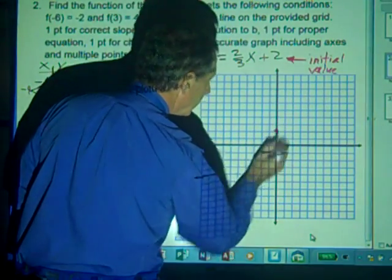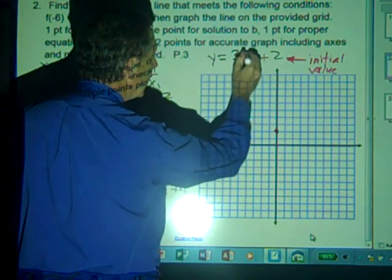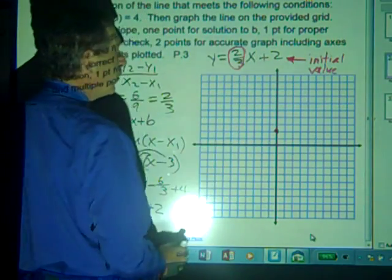So we come on our y-axis up to 2, mark our y-intercept, and here we have, in fractional form, a rise over run.